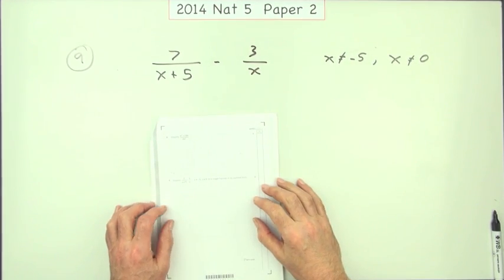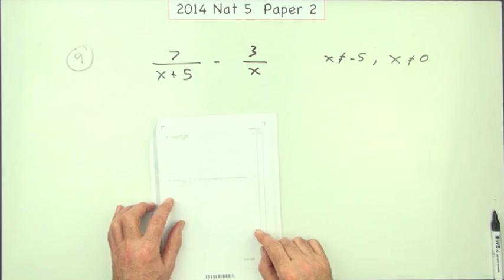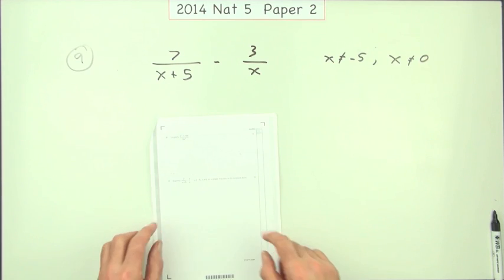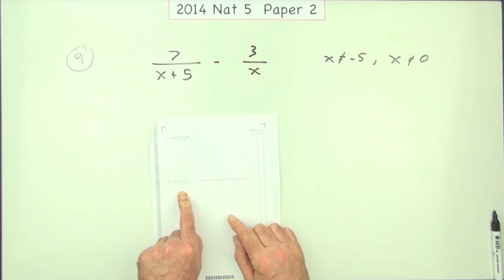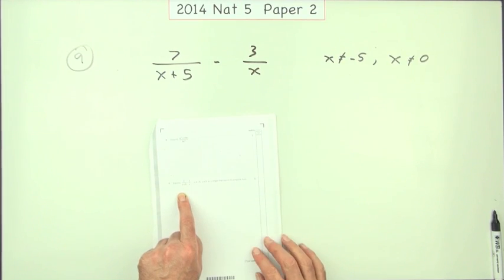Question 9 from paper 2 of the 2014 National 5, another little 3 mark question, not quite as straightforward as number 8 though. Although again here they say the correct answer without working you would get 3 out of 3, but you wouldn't take your chance with that. You'd put something down, you'd definitely do something with number 9, you'd set it out properly.